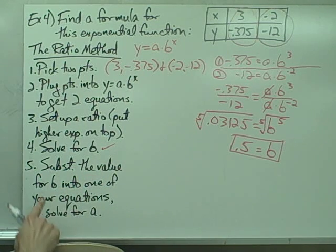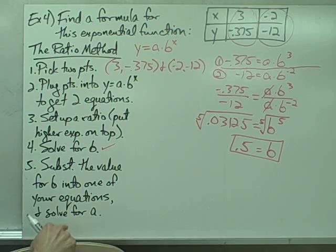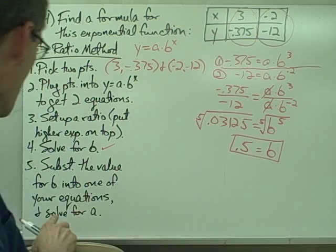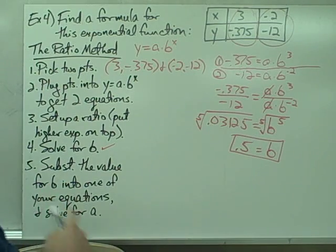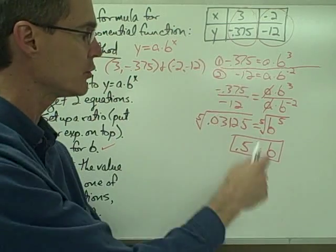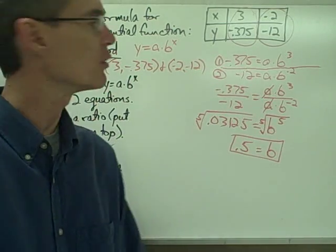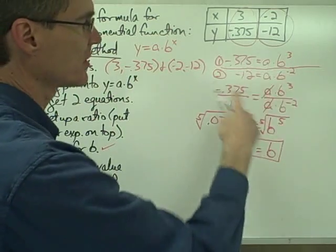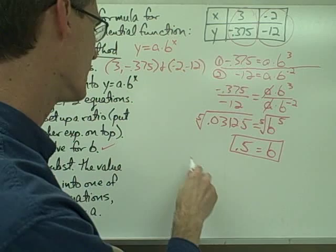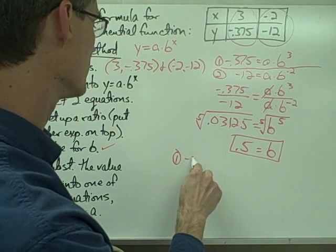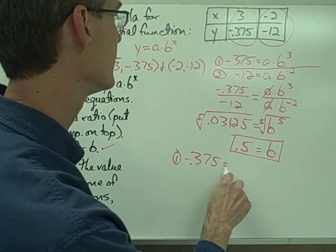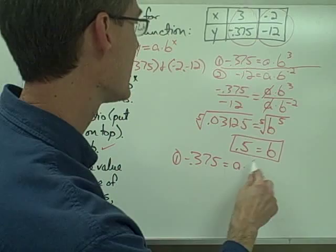Step five says substitute the value for b into one of your equations and solve for a. So I've got my value for b, now I want to figure out what my value for a is. Substitute the value for b into one of your equations. It turns out it doesn't matter which one of my two equations I choose to put in my value for b. I can choose either one. I'm going to choose this first one just because it doesn't have a negative exponent, so I suspect that's probably going to be easier to solve.